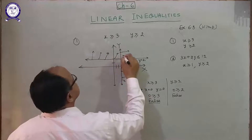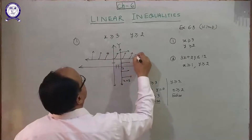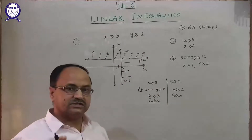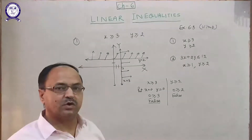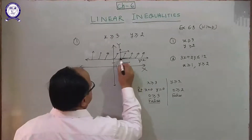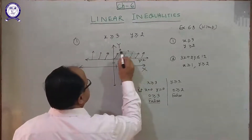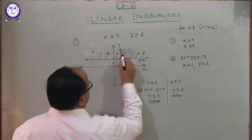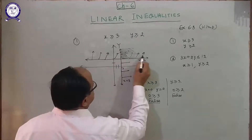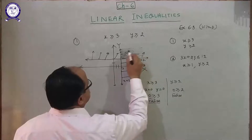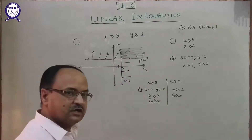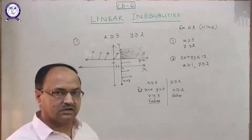This is your solution. Now, can you tell me which is the common region? This is the common region, which lies in both shaded areas. So this is the solution of question number one — the common region. Clear? This is the solution of question number one.